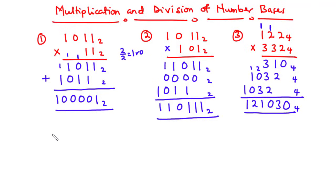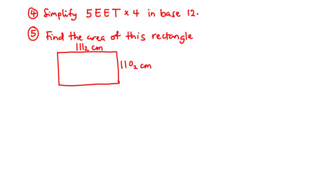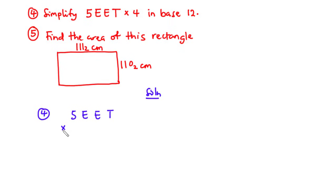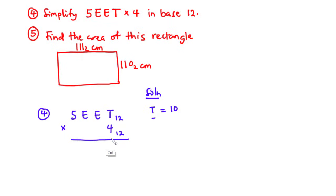Now, let's move on as we solve more complex examples. So, now to example 4: simplify 5EET times 4 in base 12. And for example 5, find the area of a rectangle. We are going to simplify 5EET times 4 in base 12. Now, because we are working in base 12, when you see the letter T, this represents the value 10. And when you see E, that is equal to 11. So let's take note of that.